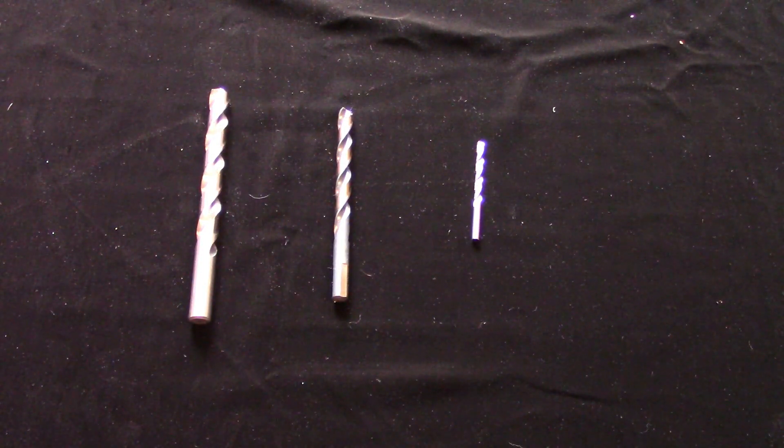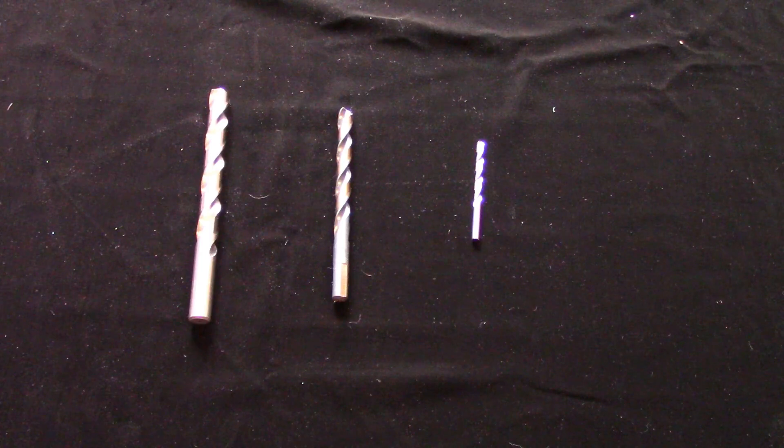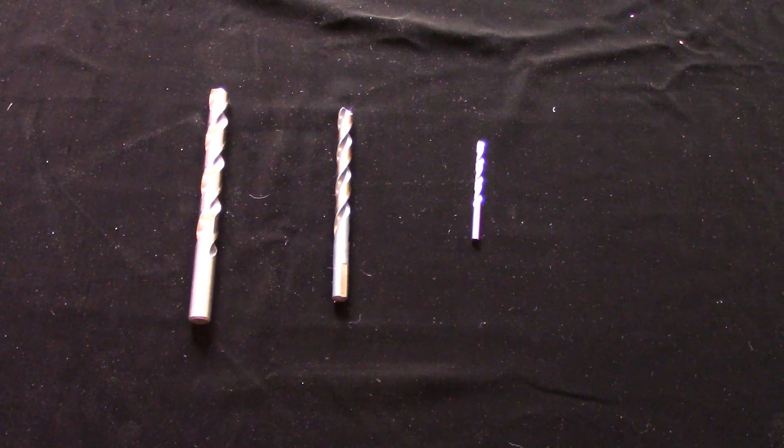Cobalt is a type of high-speed steel that contains between five and eight percent cobalt to give it higher heat resistance. As such, cutting speeds, the SFM of the tool, can be increased by ten percent over regular high-speed steel.